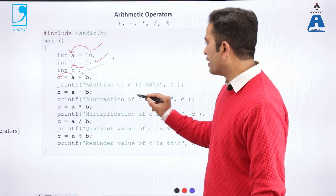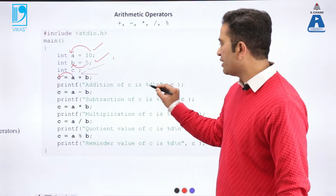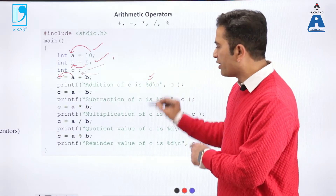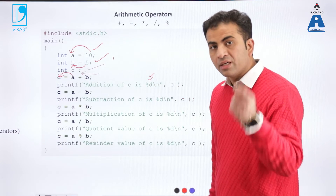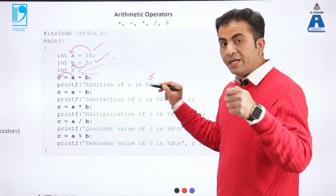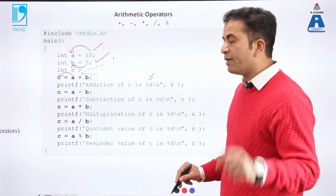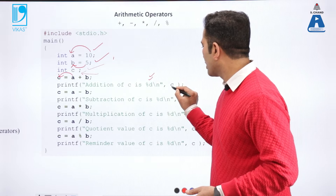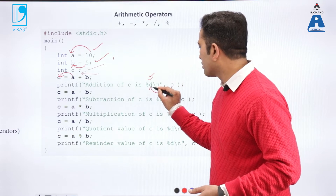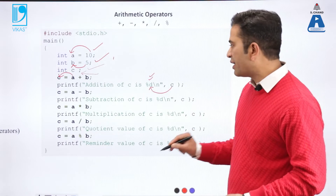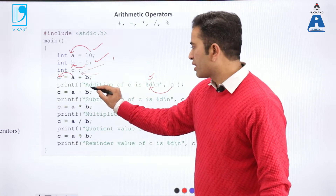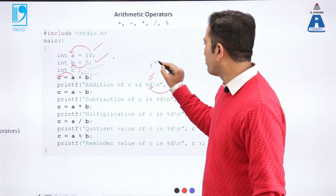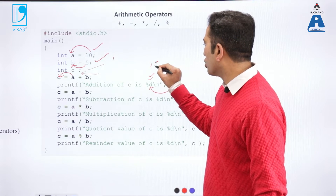Using the printf statement, we are printing the addition of c as %d. The %d means it will print the integer value of a particular variable. We want to print the value of variable c, so the output will come like: addition of c is 15. This is the output.